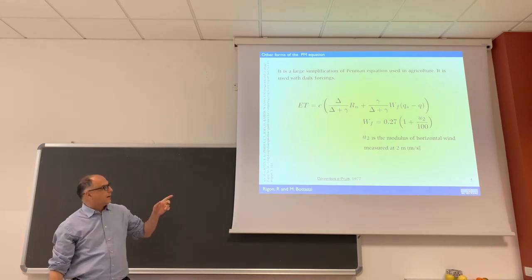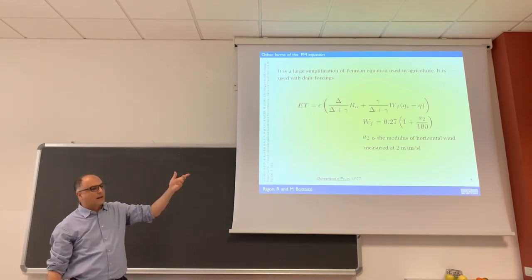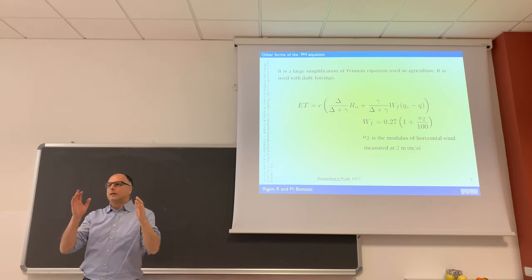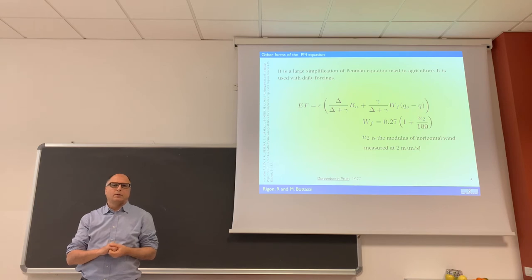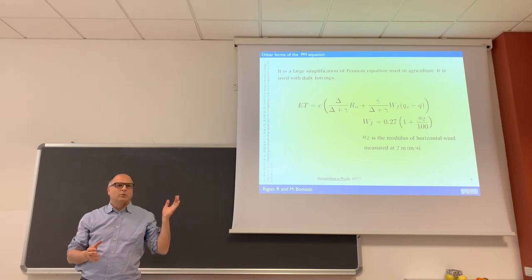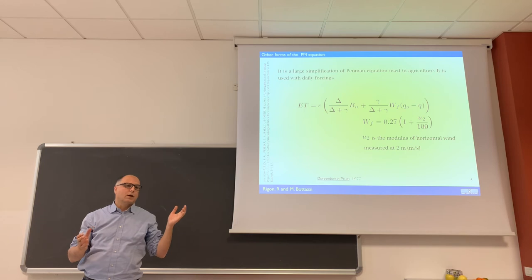So here in the FAO formulas, you have the parameter simply put on some tables for different crops, and you can have an idea of what is going on on that type of crop. If you go outside what this simplification was designed for, you can have huge errors.